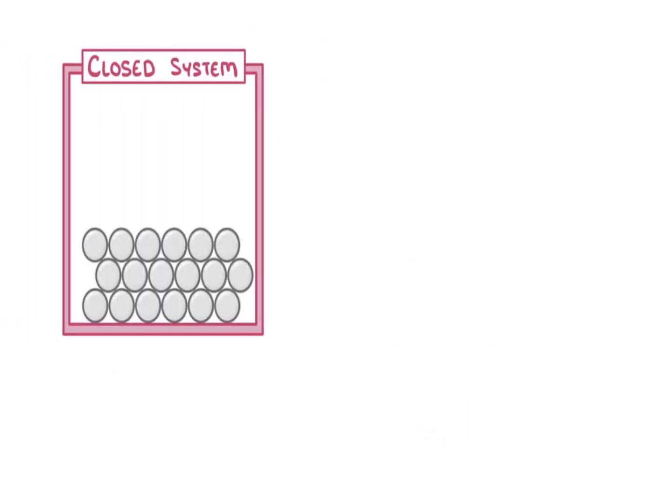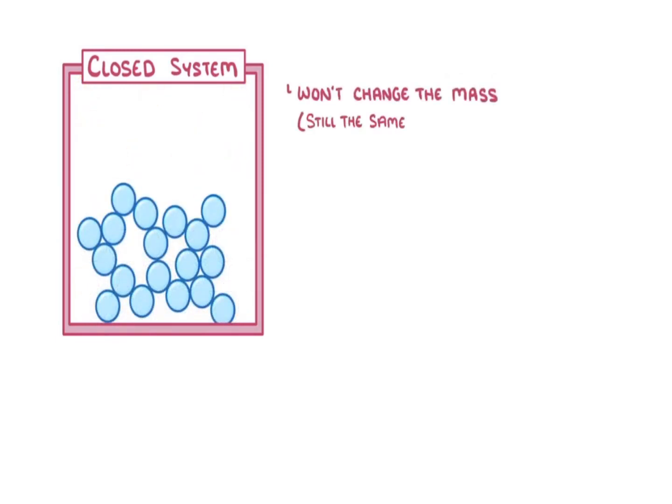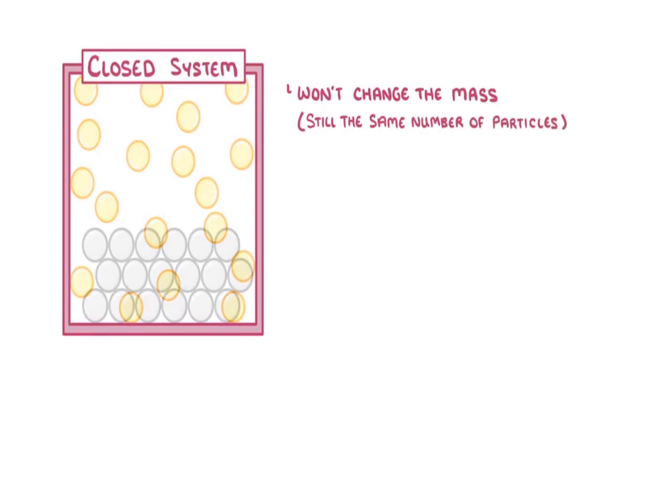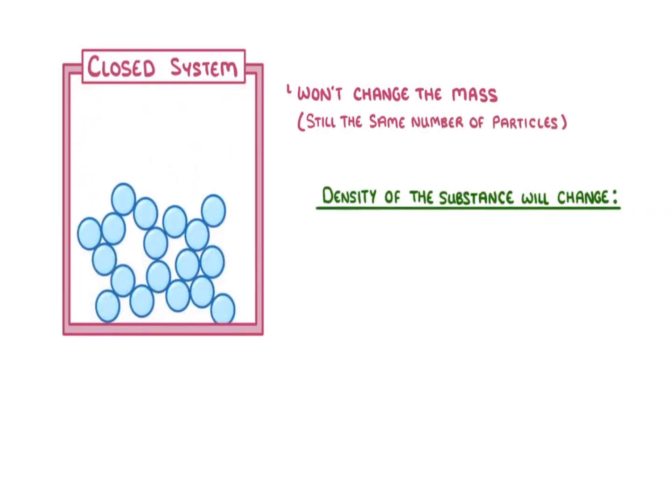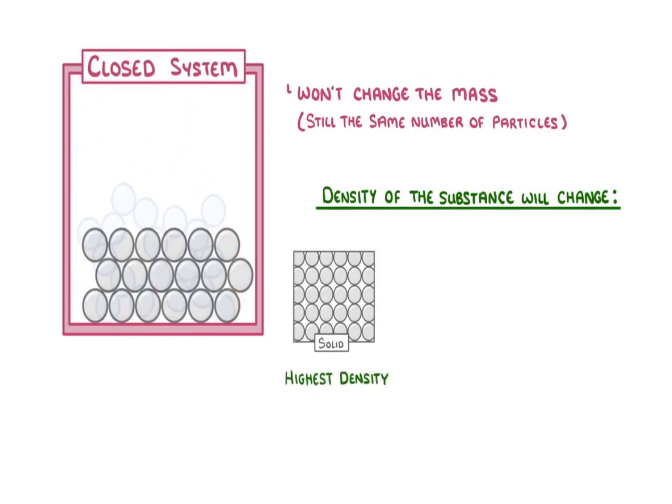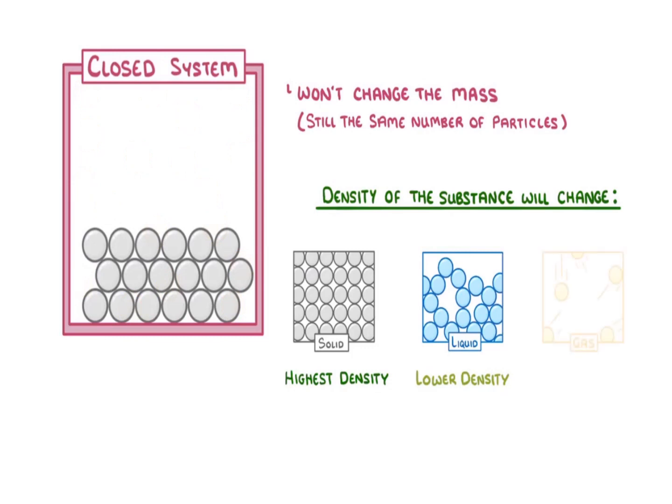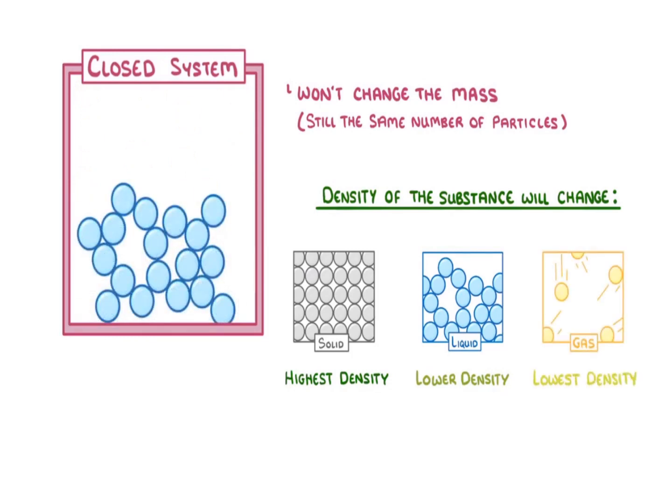Now the last thing we need to mention is that if we're working within a closed system, changes in state won't change the mass at all as there are still the same number of particles. However, the density of the substance will change, with solids having the highest density, liquids having slightly lower density, and gases having the lowest density of all three.